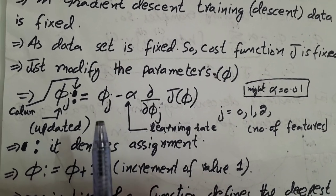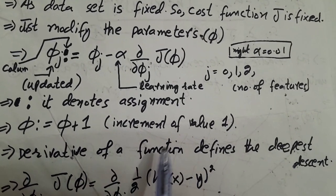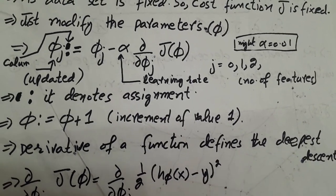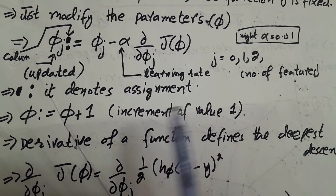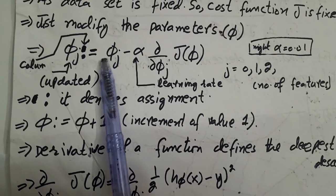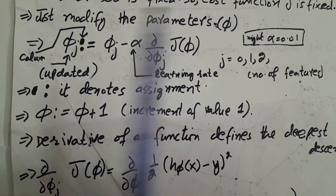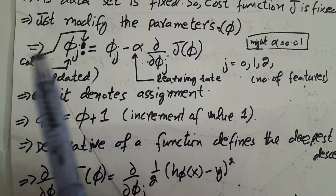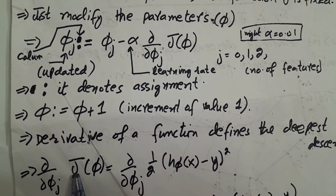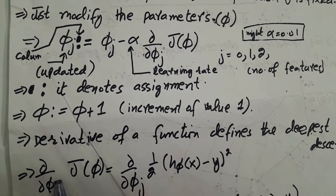Now here, the derivative of a function defines the deepest descent. If you want to get the deepest descent, you have to take the derivative of the function. Now the function is given here. We are going to take its derivative. It was previously discussed in lecture number 3 part 2. Now we are going to take the partial derivative.